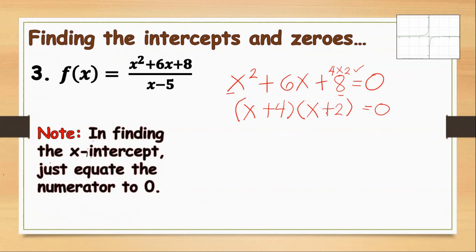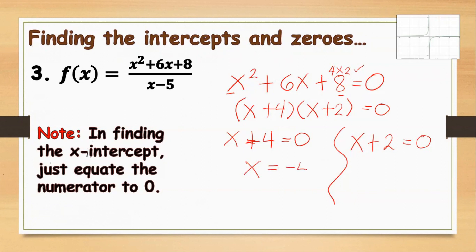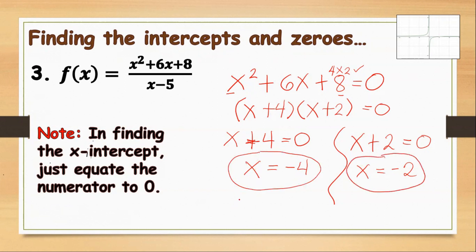Now that we have the factors, we can find the value of x. Setting x plus 4 equals 0 gives x equals negative 4. Setting x plus 2 equals 0 gives x equals negative 2. These are the zeros and x-intercepts of our function, expressed as points: (negative 4, 0) and (negative 2, 0).